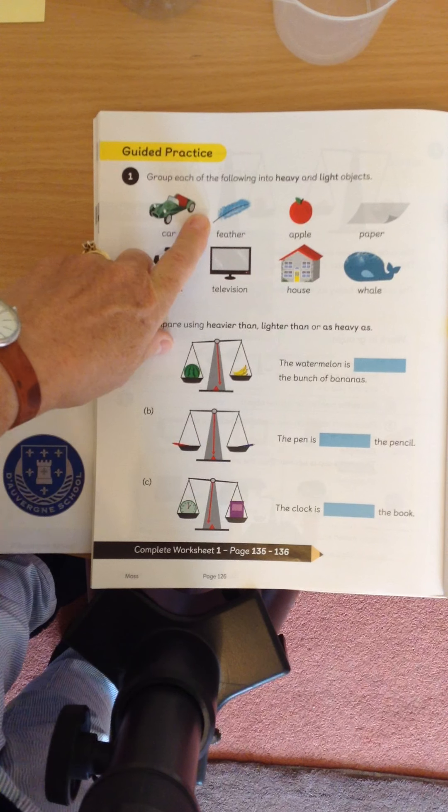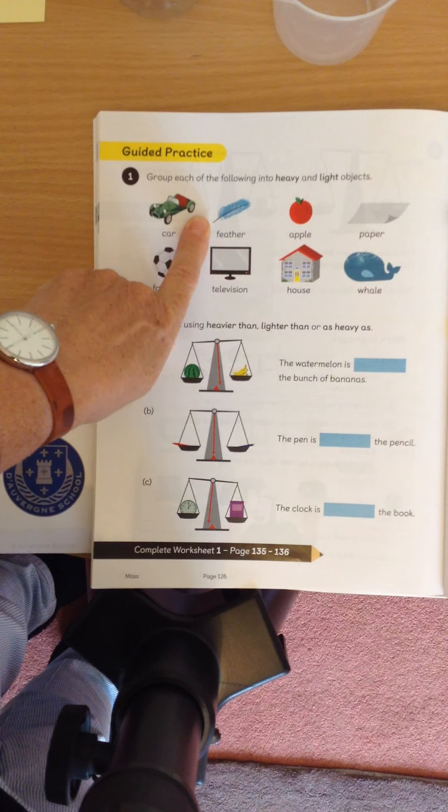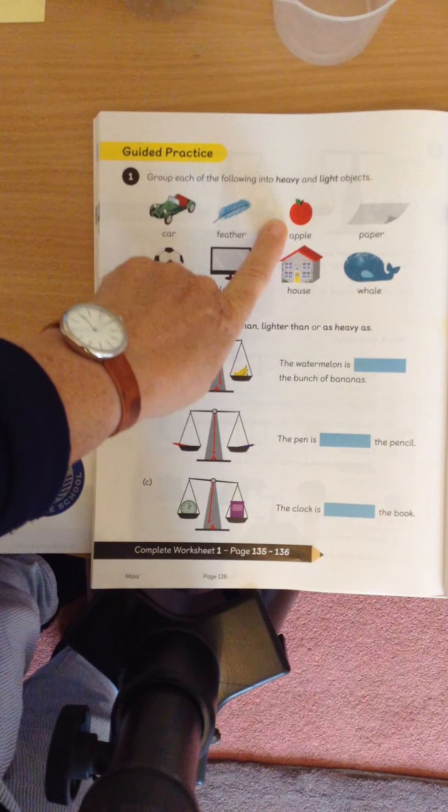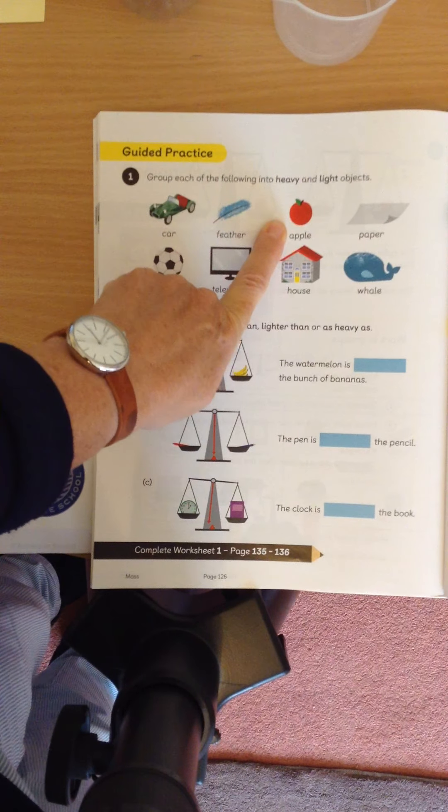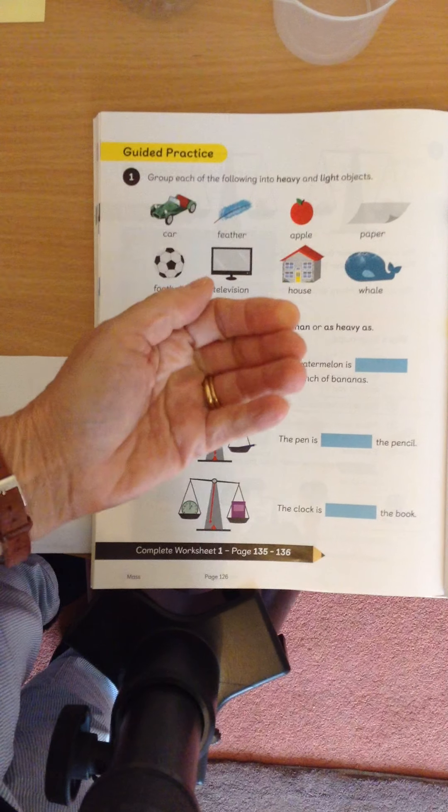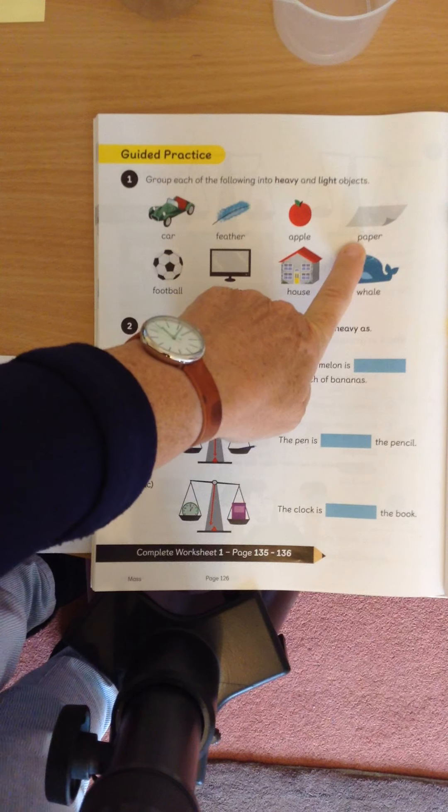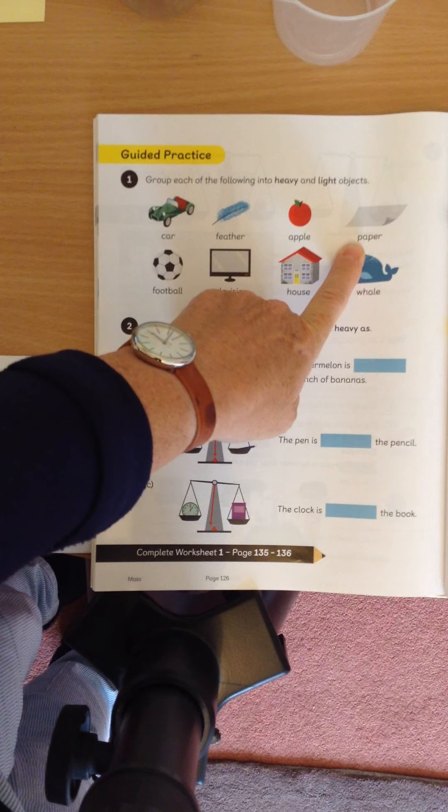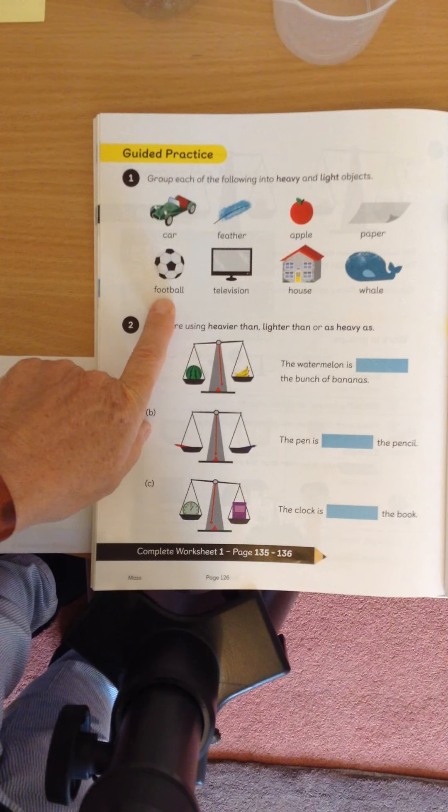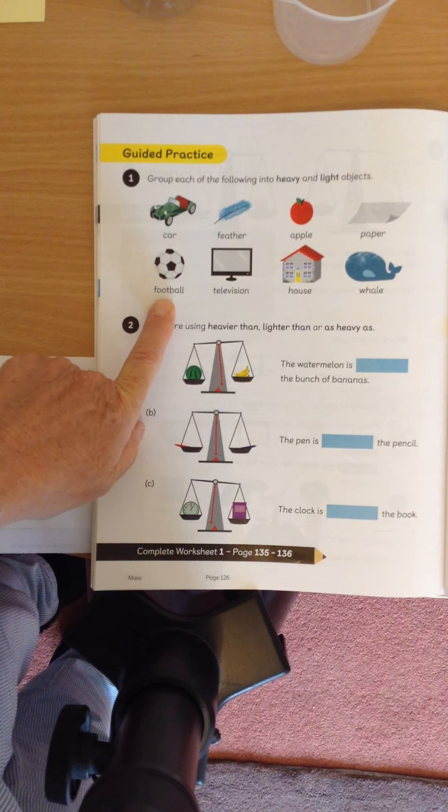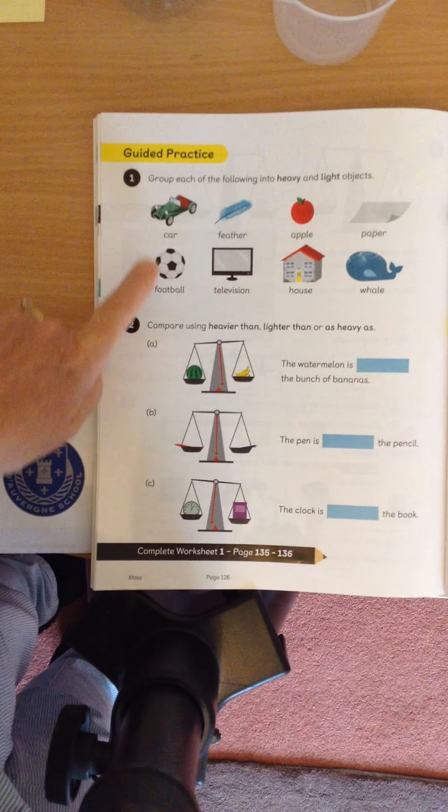A feather, heavy or light? That's right, it's light. An apple, heavy or light? Yes, it's light. You can hold it in your hand, it's not very heavy. Piece of paper, heavy or light? That's right, it's light. A football, heavy or light? Yes, that's quite light as well. It's not as heavy as a car, definitely.